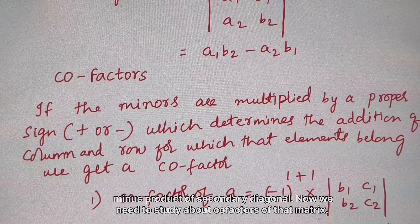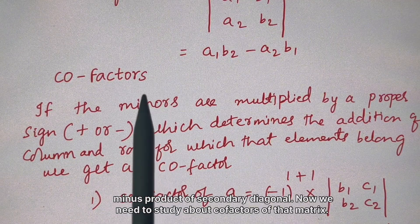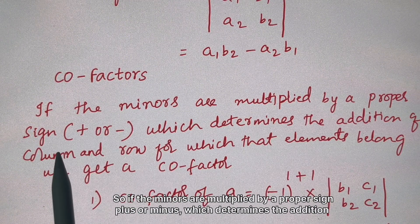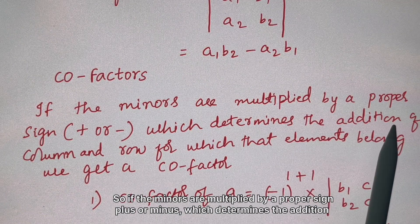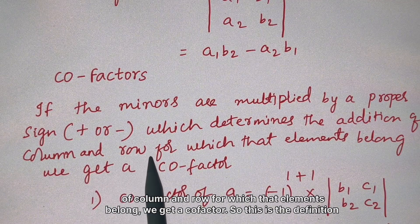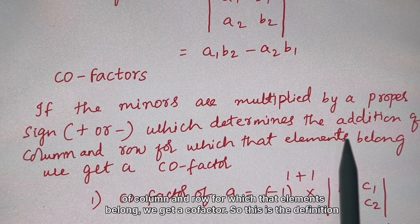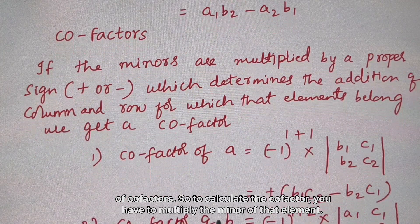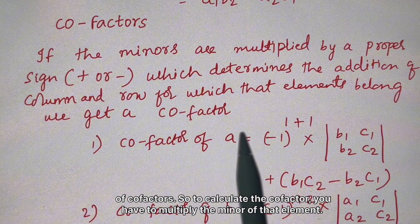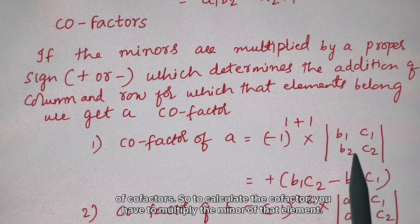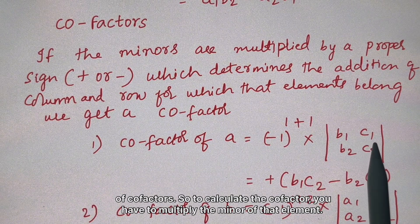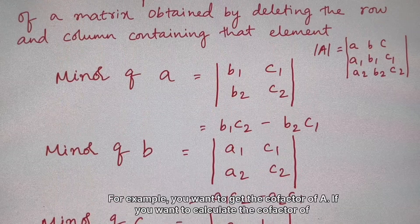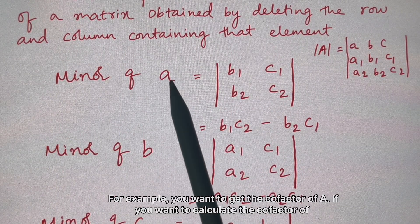Now we need to study cofactors. If the minors are multiplied by a proper sign (plus or minus), which is determined by the sum of the row and column indices of that element, we get a cofactor. To calculate the cofactor, you multiply the minor of that element by (-1) raised to the power of (row + column).